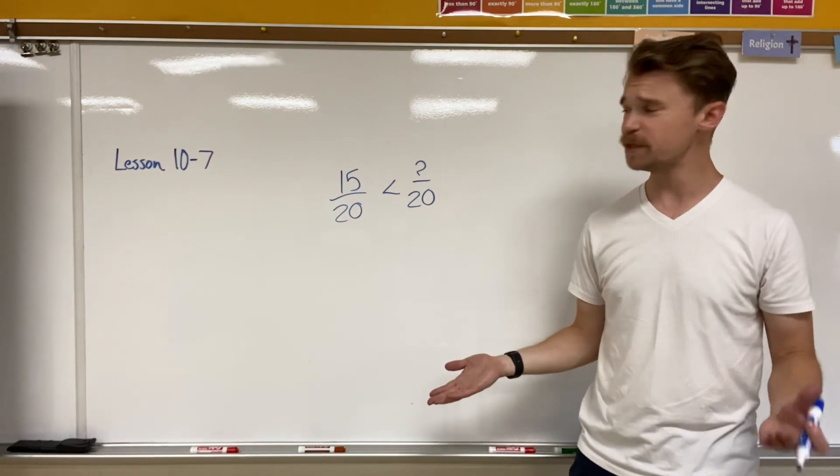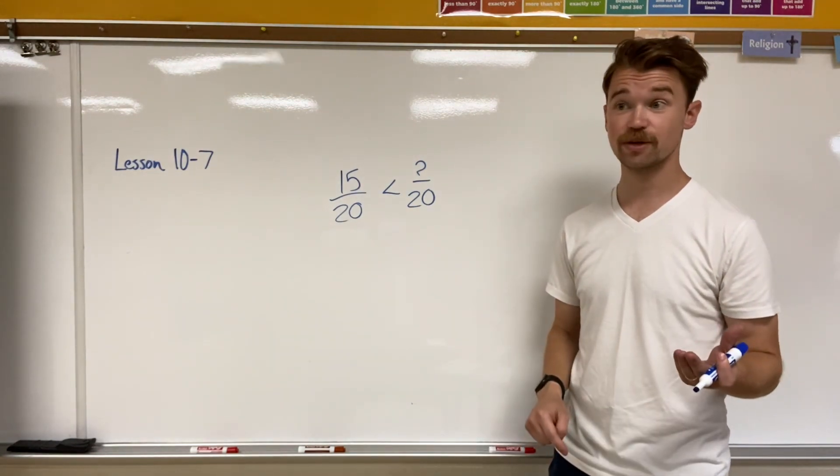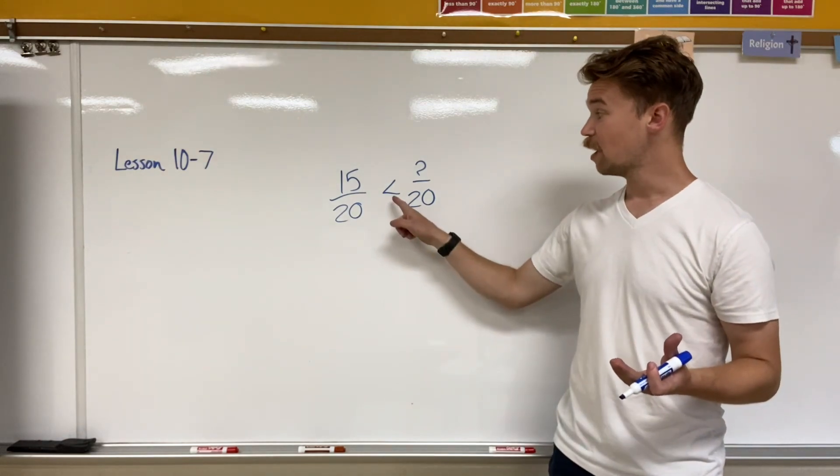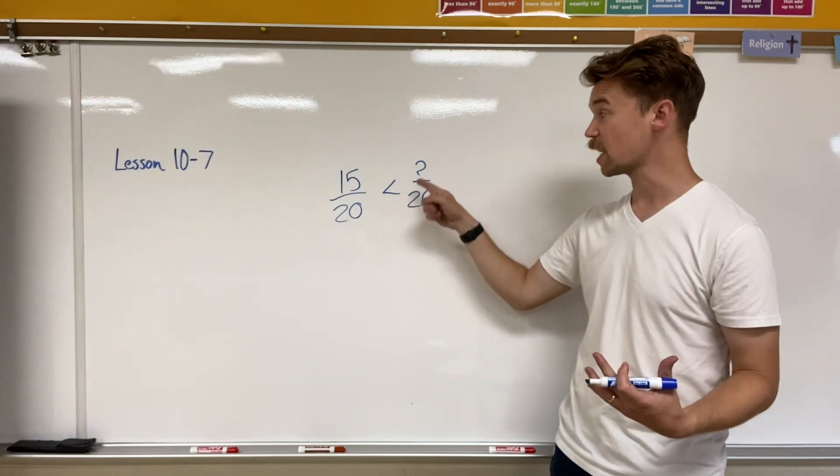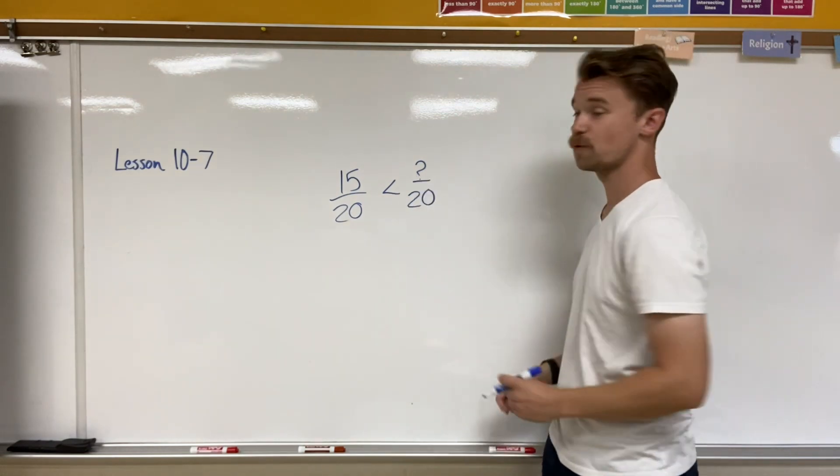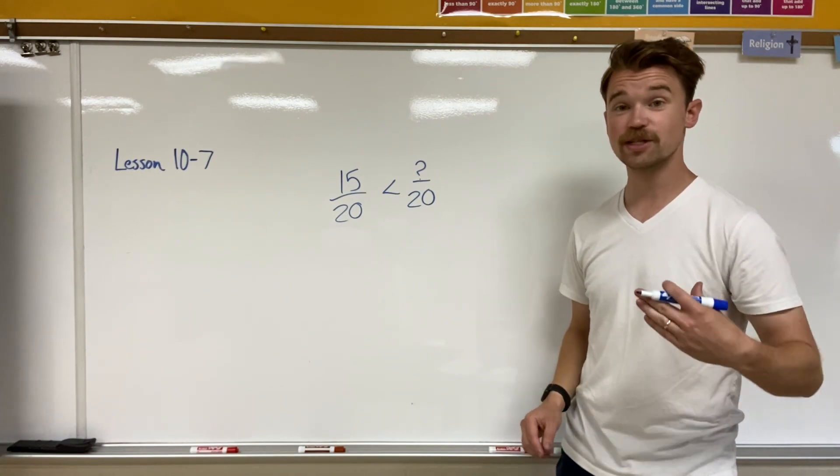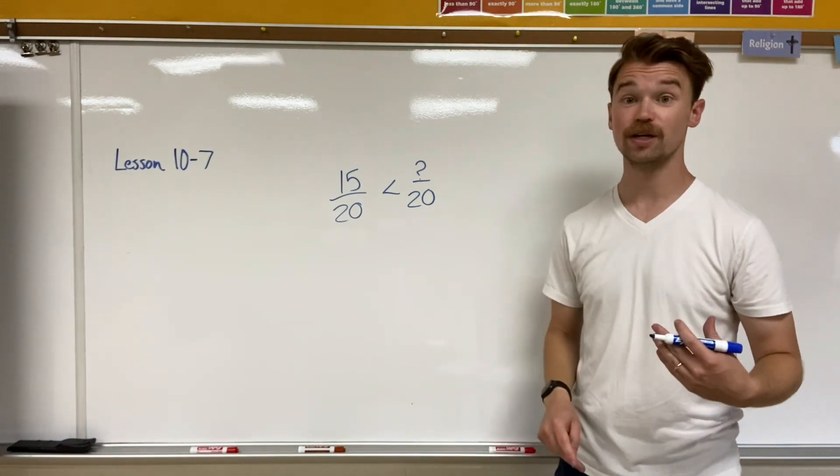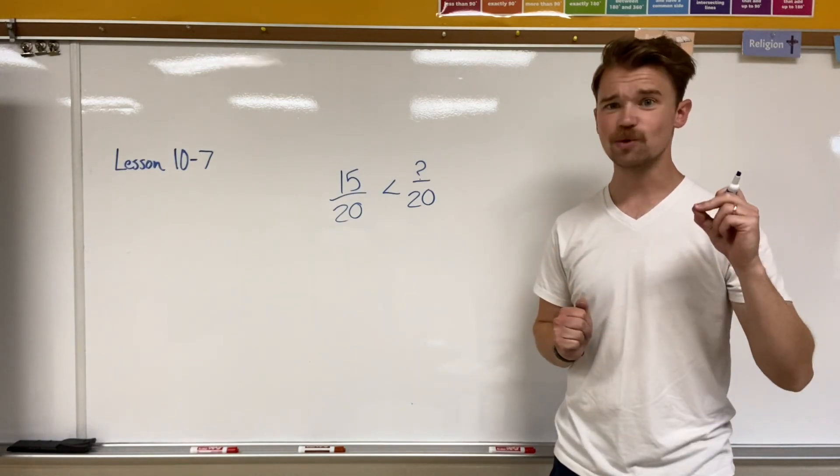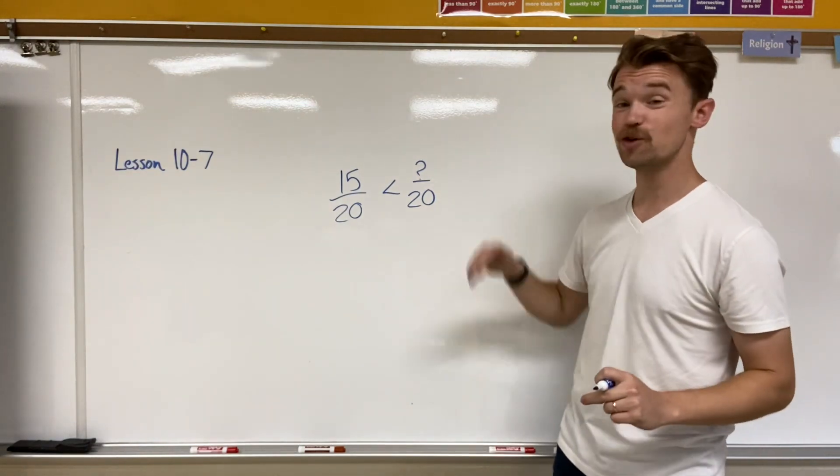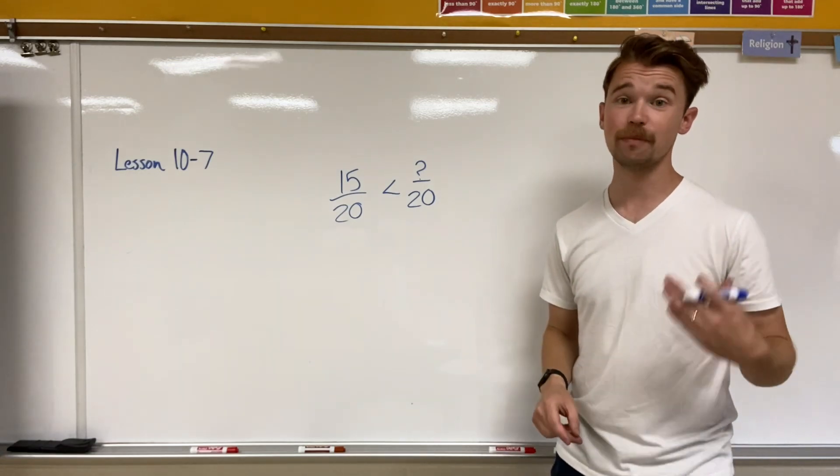Now, I have a problem that looks a little bit different here. I have both my denominators are both twentieths, which means that we can compare those fractions. I have fifteen-twentieths is less than something-twentieths. We don't know what that something is. In this one, we're supposed to decide what that number could be. Now, there's more than one right answer, but there is one specific rule. My numerator cannot be bigger than my denominator unless it's an improper fraction.